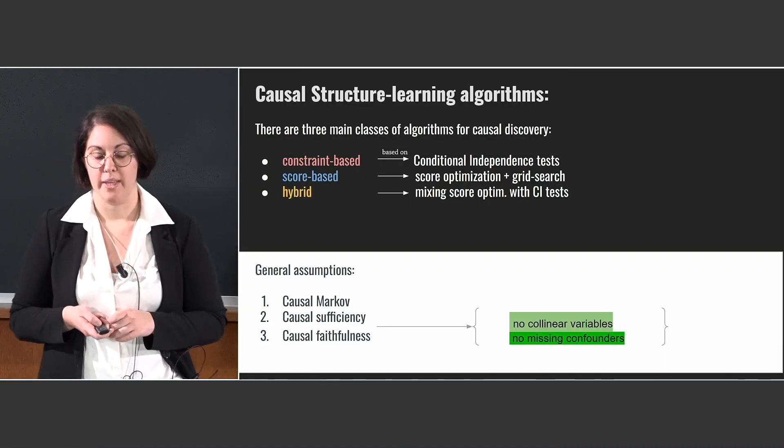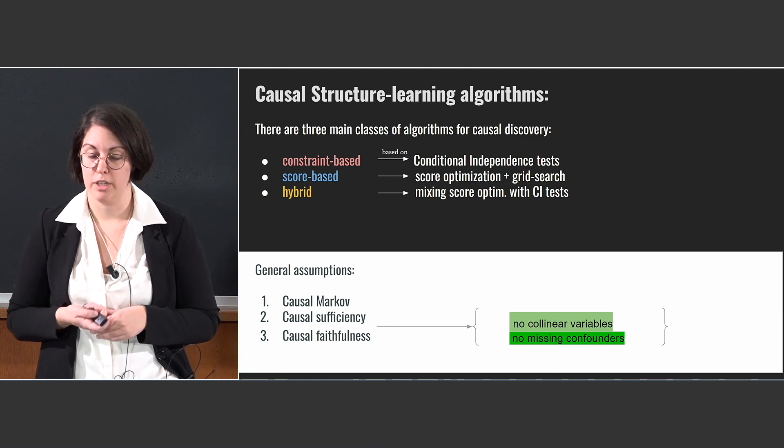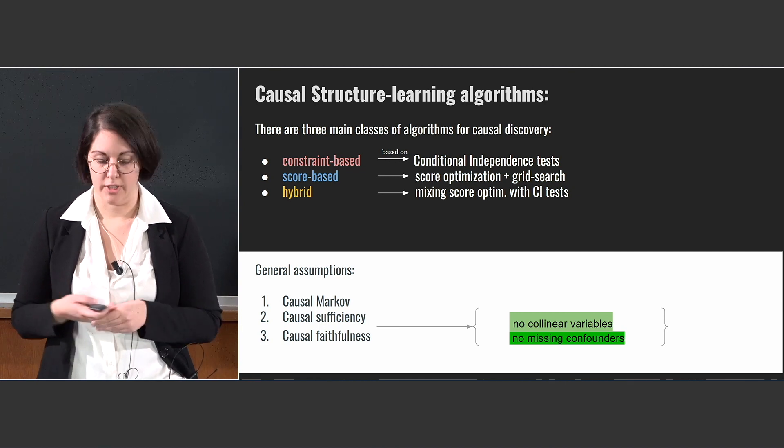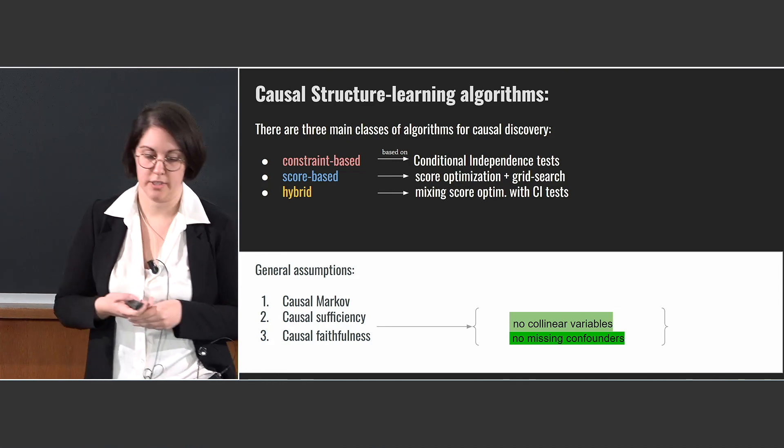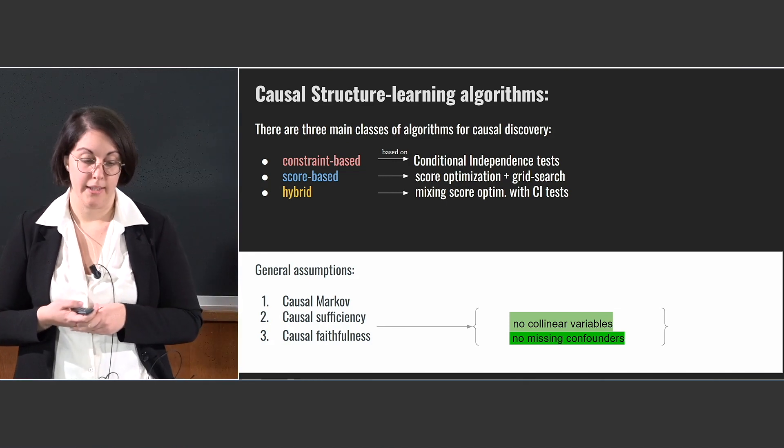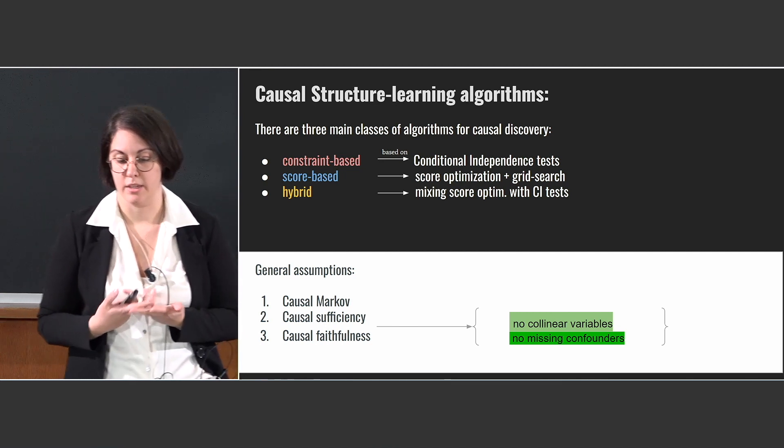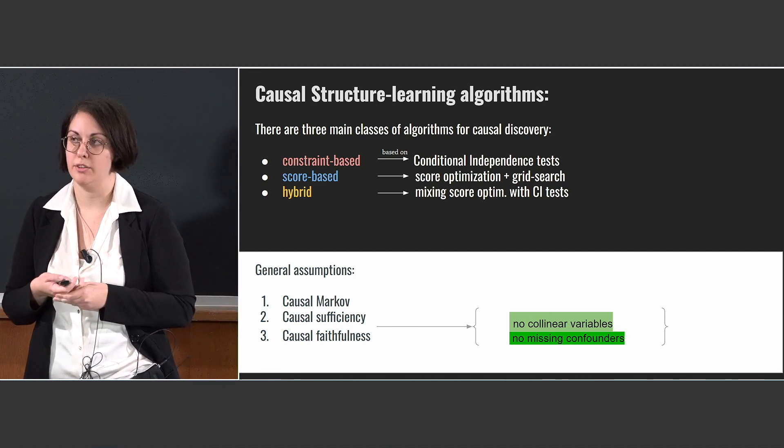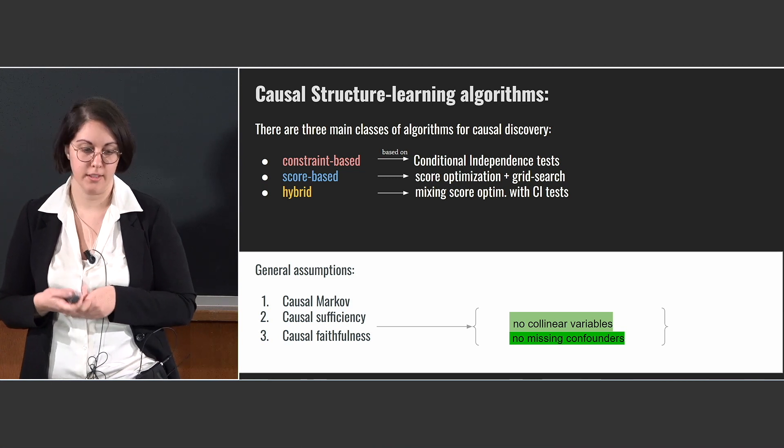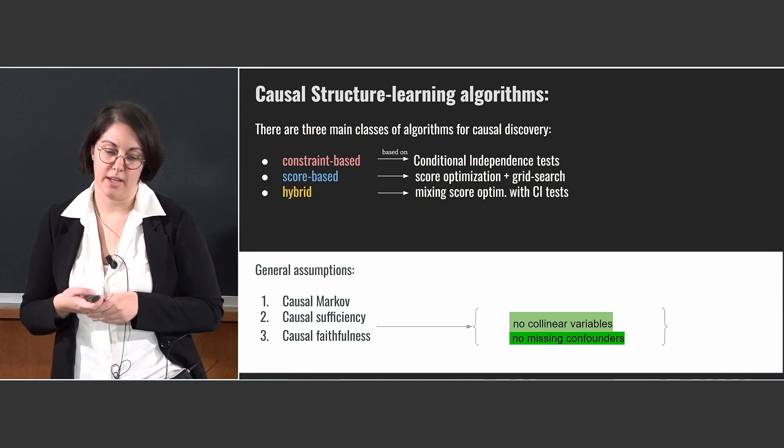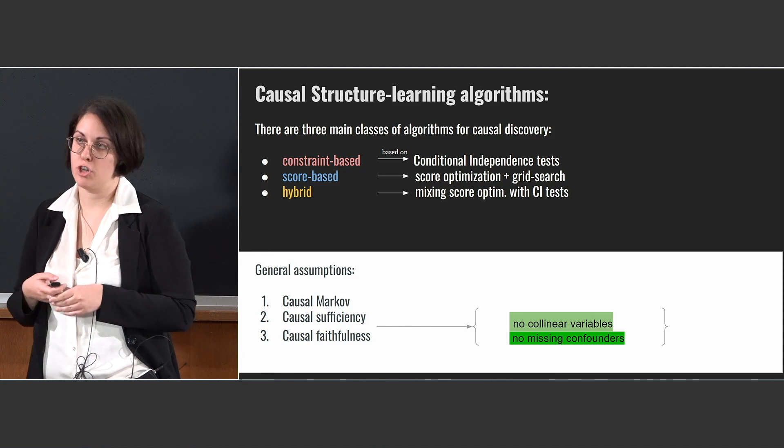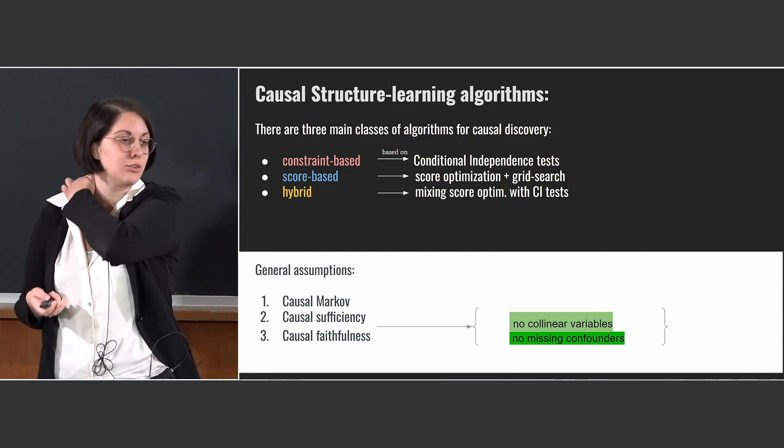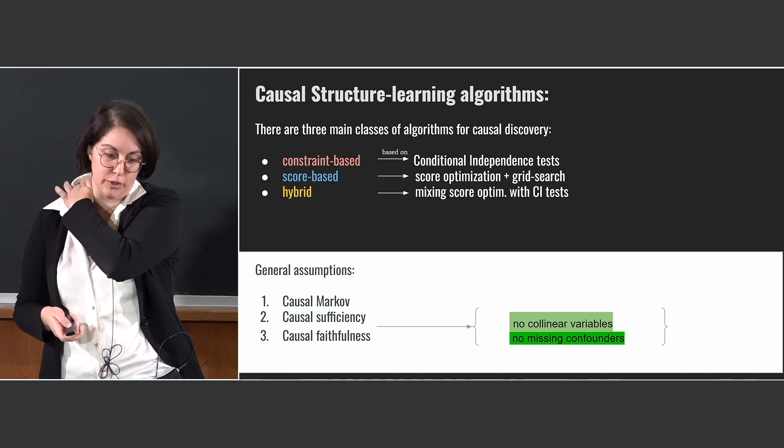And we can define three main classes of algorithms for causal structure learning. Causal discovery and causal structure learning are synonyms. And they are constraint-based, score-based and hybrid. Constraint-based, as I already anticipated, are based on conditional independence tests, while score-based are based on the optimization of a score function defined on the graph space, and hybrid are the mixing of the two.